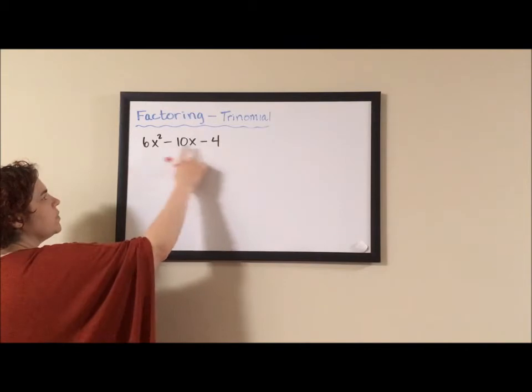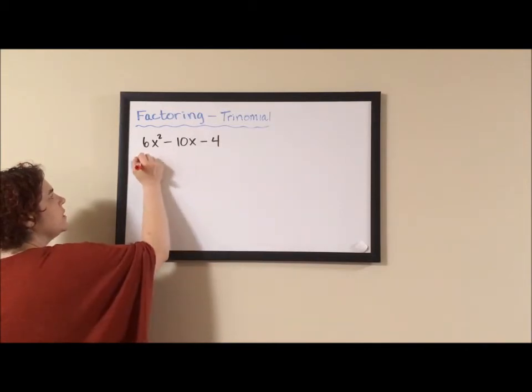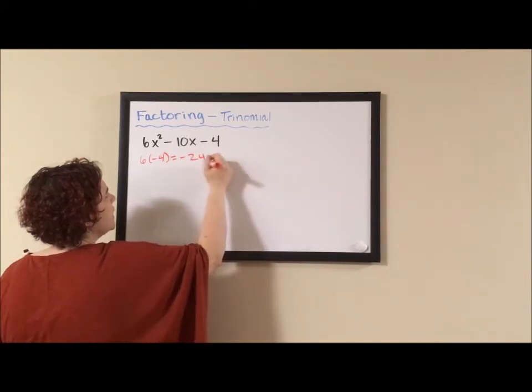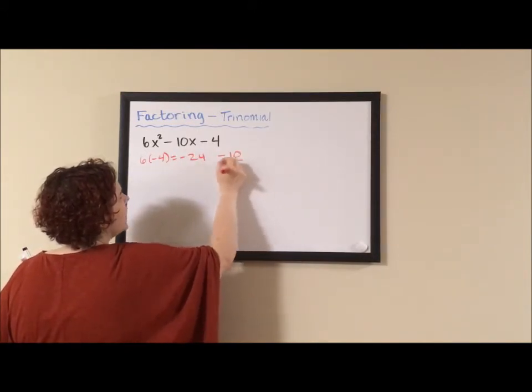AC means you multiply your A times your C. Six times four is negative 24 and we want two numbers that multiply to negative 24 and add up to negative 10.